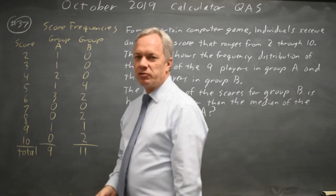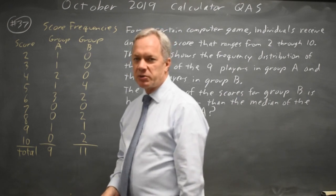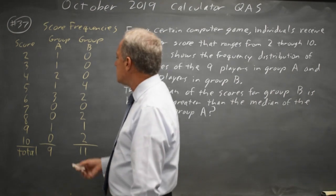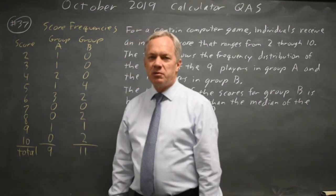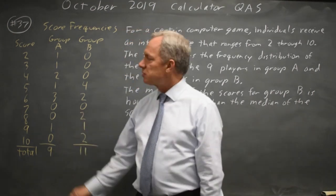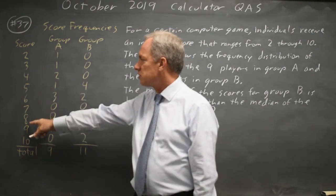Make sure you understand how to read frequency distributions because College Board does ask them from time to time. So the median score will be the middle score when sorted smallest to largest. These are sorted smallest to largest here.